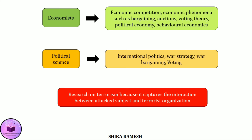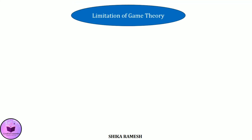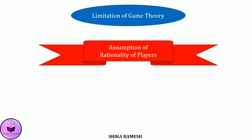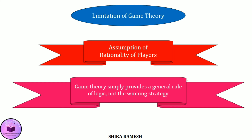The biggest issue with game theory is its assumption of rationality itself. Sometimes players can be irrational, which makes the situation more complex to handle. In such cases, game theory can be applied only to a certain extent. Also, game theory provides only a general rule of logic — it doesn't provide any guaranteed winning strategy. Rather, it indicates that if a player adopts a particular strategy, there is a higher chance of getting a maximum payoff from that strategy.